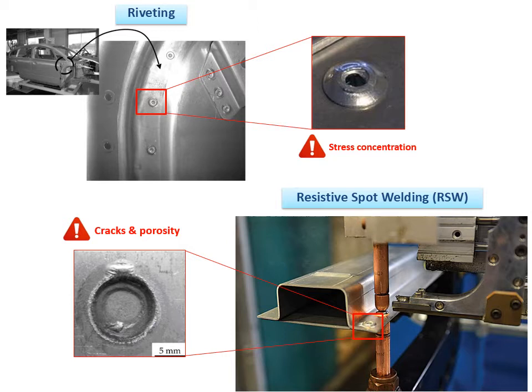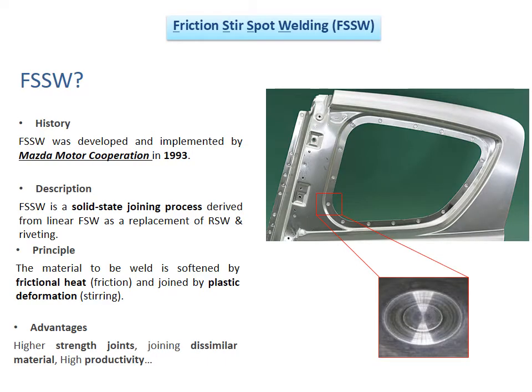Friction stir spot welding is one of the linear friction stir welding variants developed by Mazda Motors Corporation to replace riveting and resistive spot welding. The potential of this welding technique is the creation of welds while the material is still at its solid state. Therefore, defects related to fusion, such as cracks and porosity, are avoided and strong joints are obtained.